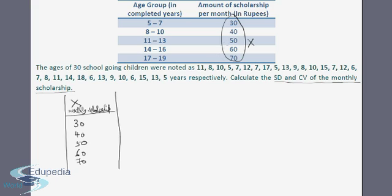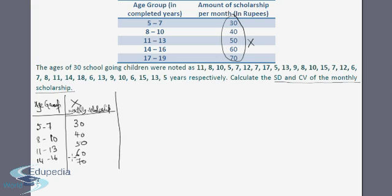Since x is the monthly scholarship, the frequency values come from the age groups. The age groups are: 5 to 7, 8 to 10, 11 to 13, 14 to 16, and 17 to 19. The scholarship of rupees 30 is given to the age group 5 to 7, rupees 40 to ages 8 to 10, and so on up to rupees 70 for ages 17 to 19.